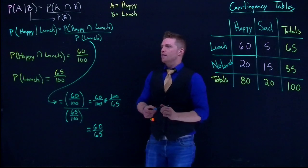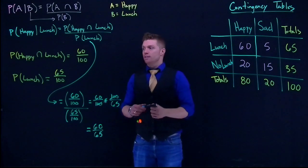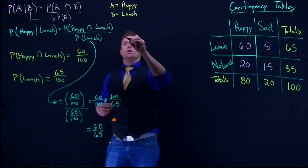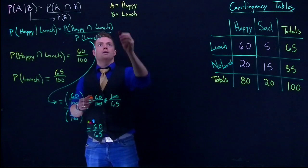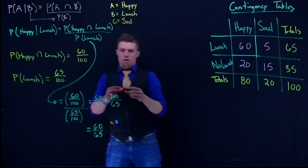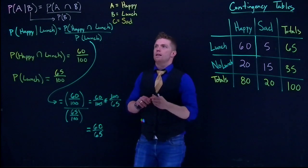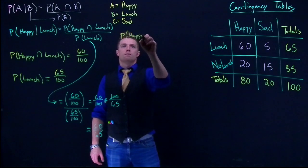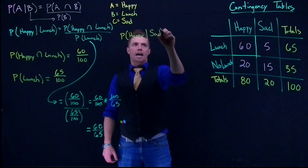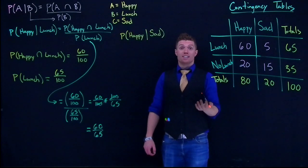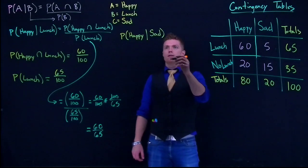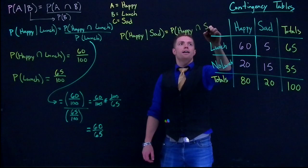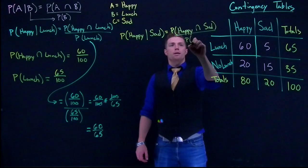What if instead of happy given lunch, we did something like happy given sad? You might say that's kind of obvious, but let's walk through it. Event C is equal to sad. What is the probability of being happy given that somebody is sad? Intuitively it should be zero, but let's see how this goes. We need to figure out the probability of happy intersect sad divided by the probability of being sad.